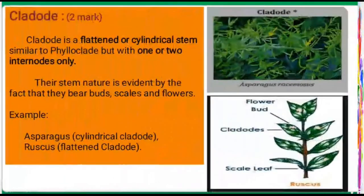Another main topic is cladode. Cladode is a plant with a cylindrical stem similar to phyloclad. Phyloclad and cladode are almost the same, but cladode has only one or two internodes present — this is the key difference.